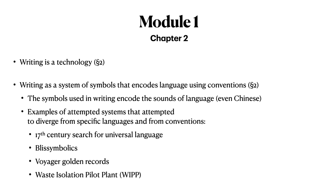In Chapter 2, we established that writing is a technology. Importantly, we determined that writing is a system of symbols that encodes language using conventions. We established that the symbols that encode writing encode the sounds of language, and that this is true even in Chinese.